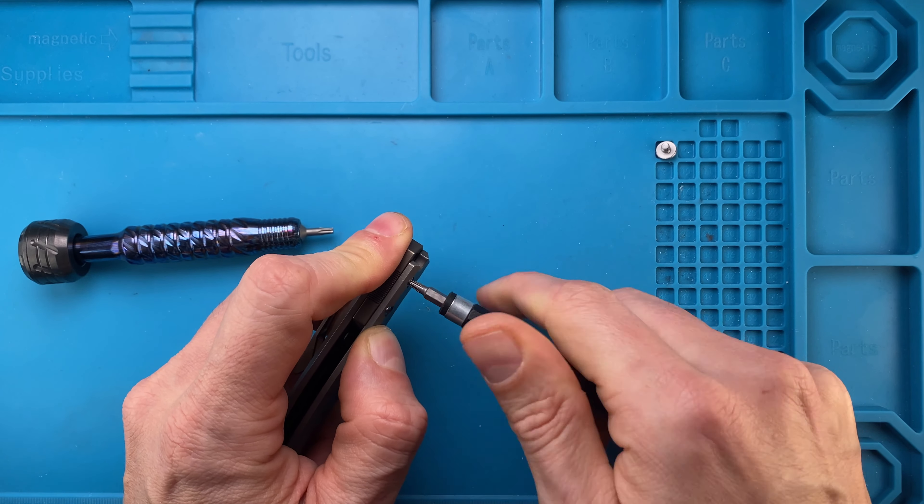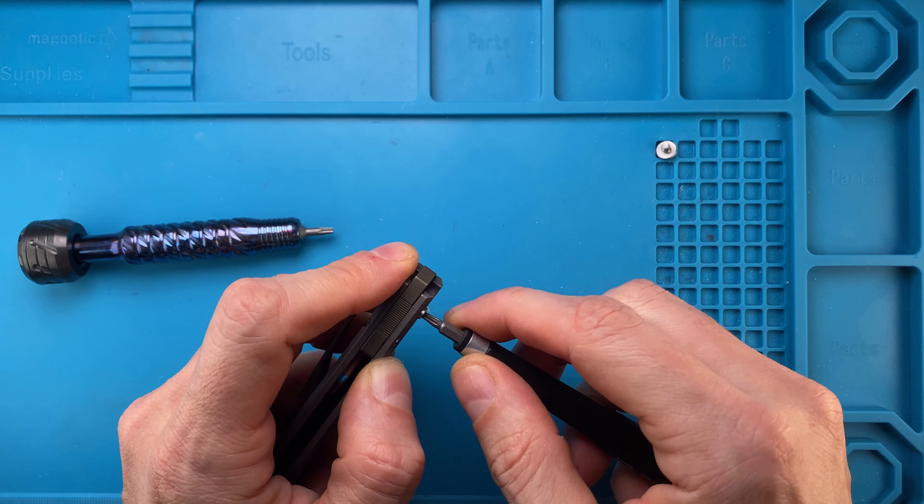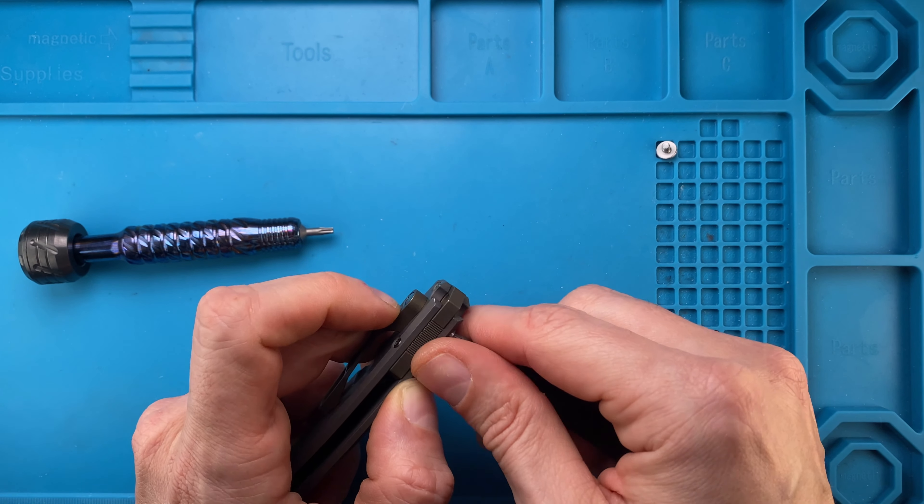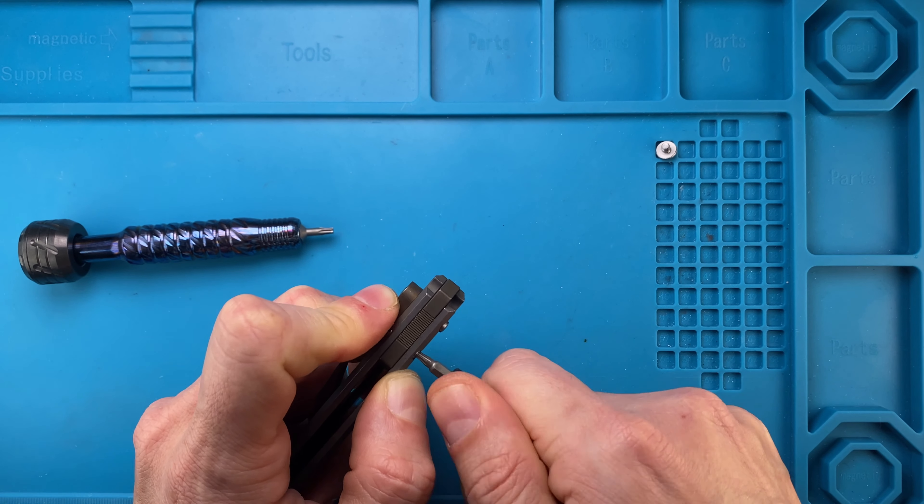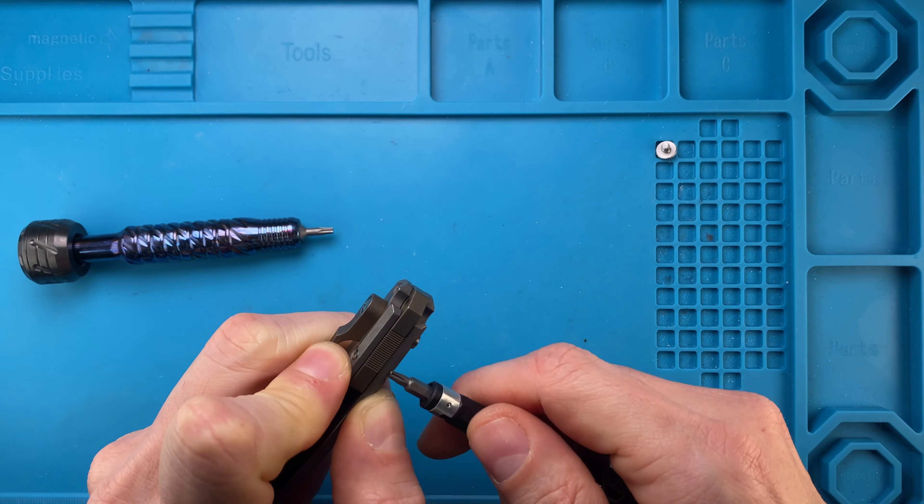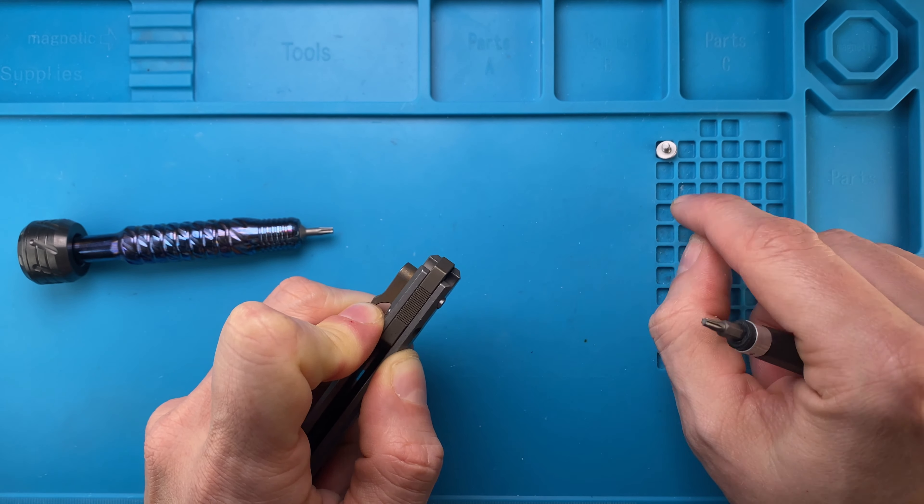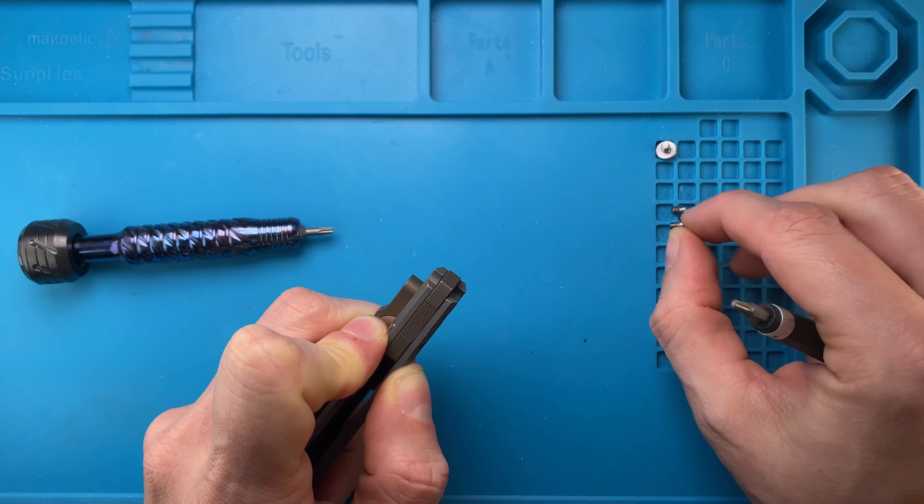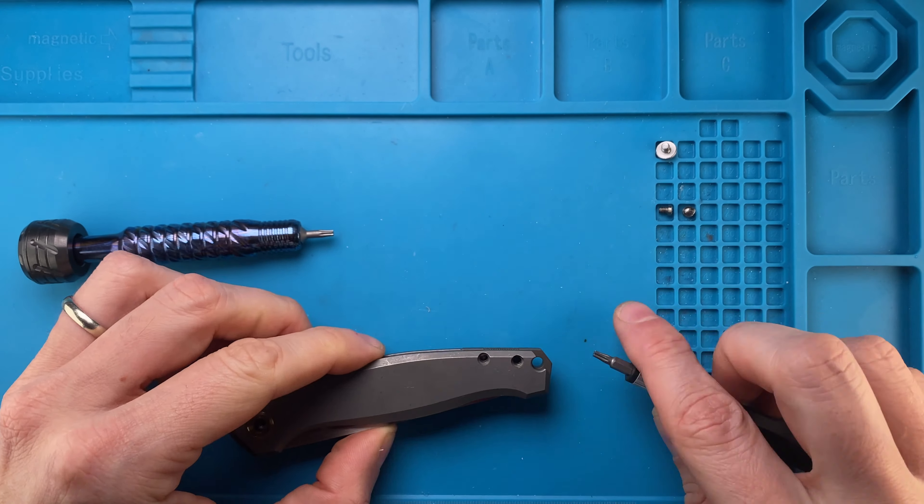And then we can do this side over here, same T8. Nothing is spinning because this is just screwed into the scale, which is not ideal. I prefer when the screw is screwed into the backspacer, for example. Let's see what's inside of this guy over here.